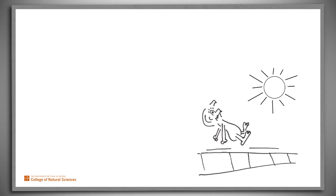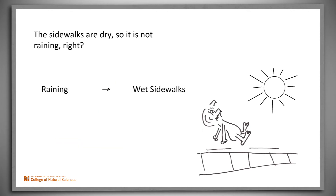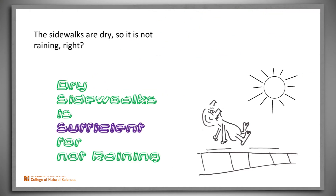With a clear definition of sufficient condition, let's return to the sidewalks example. The sidewalks are dry, so it's not raining, right? Yes. Recall that raining is a sufficient condition for wet sidewalks — in other words, raining implies wet sidewalks. Its contrapositive must also be true: not wet sidewalks implies not raining. Using our definition of sufficient condition, we have that "dry sidewalk" is a sufficient condition for "not raining."